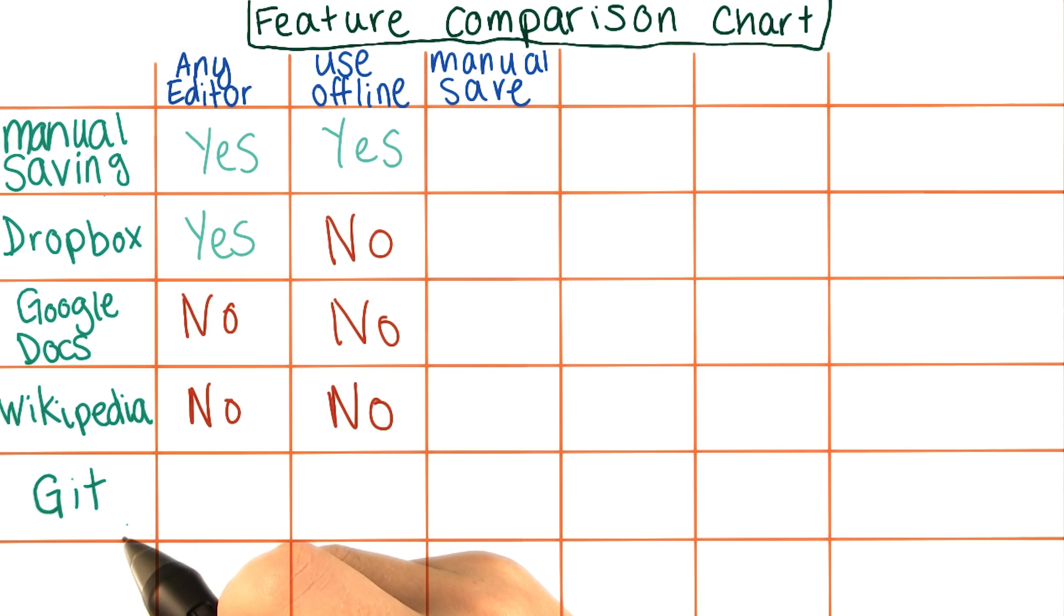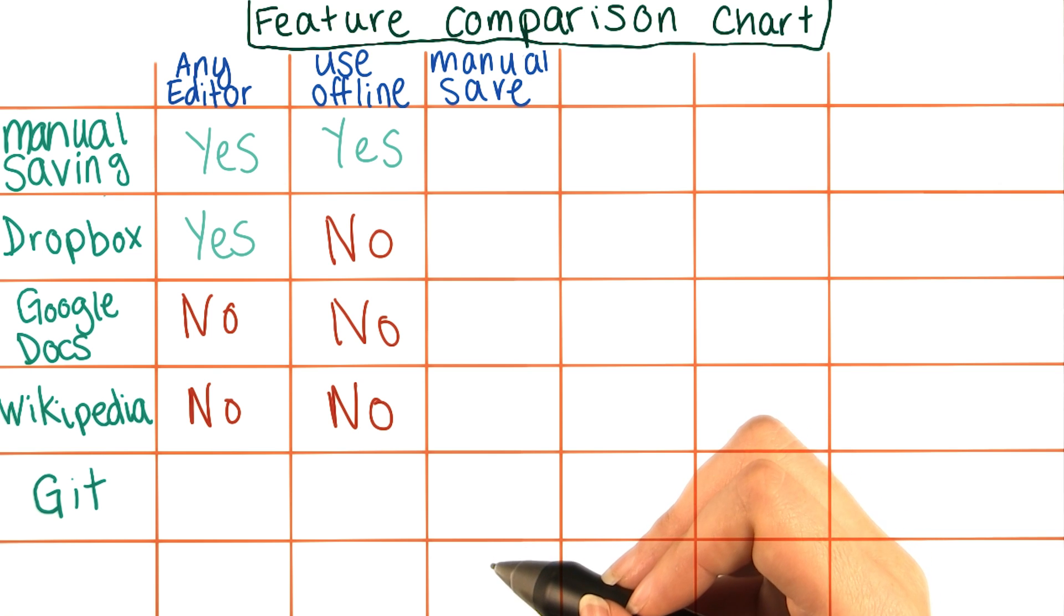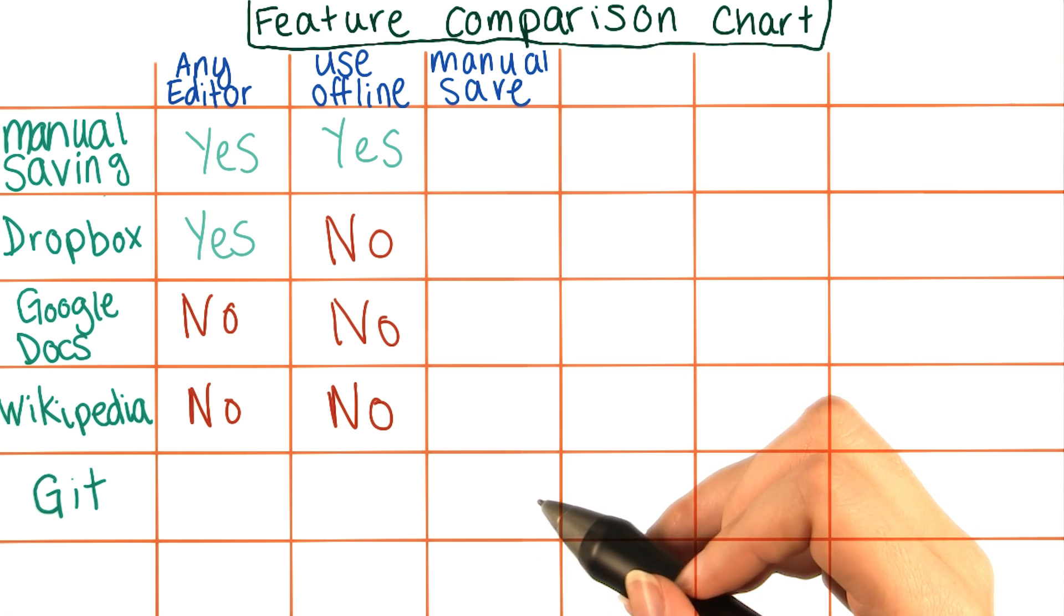Git was designed with code in mind. It's not the only system built with that goal though. One early, widely adopted version control system for code is called CVS, Concurrent Version Systems. Another system, SVN, also known as Subversion, is fairly similar but improved on CVS to some extent.